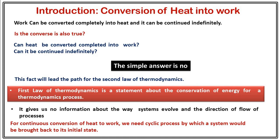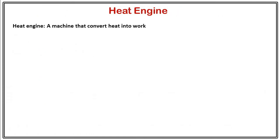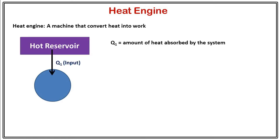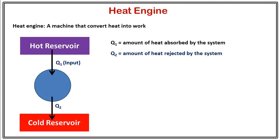For continuous conversion of heat into work we need a cyclic process by which a system would be brought back to its initial state. That is, we need a heat engine. So a heat engine is a machine that converts heat into work. Let's say we have our system and this system undergoes a cyclic process. This system absorbs Q1 amount of heat from a hot reservoir.